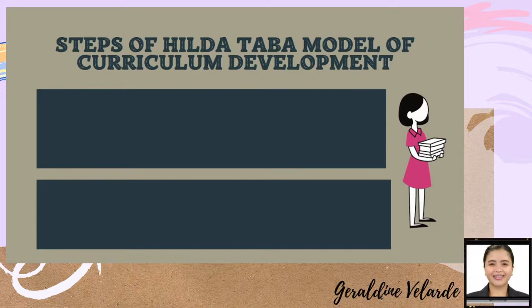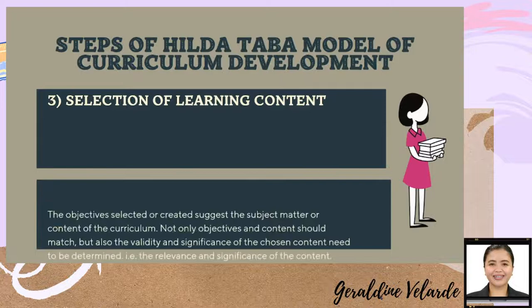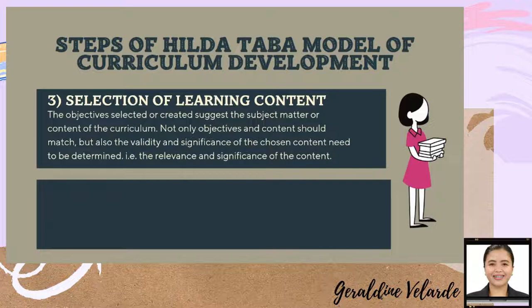The third step of the Hilda Taba model is the selection of learning content. The objectives selected or created suggest the subject matter or content of the curriculum. Not only should objectives and content match, but also the validity and significance of the chosen content need to be determined. The main goal for this step is the relevance and significance of the learning content towards the learning objective identified in the second step.